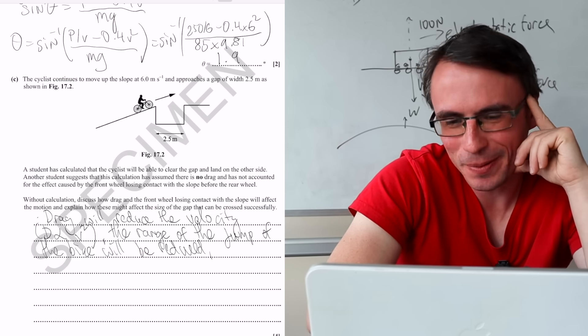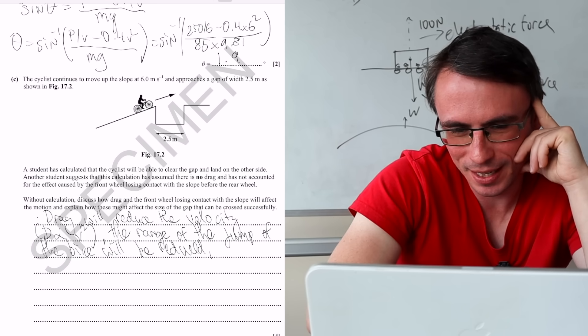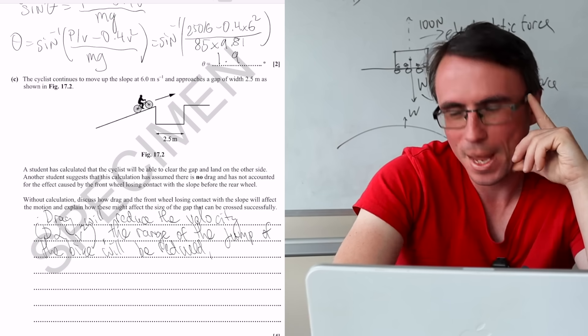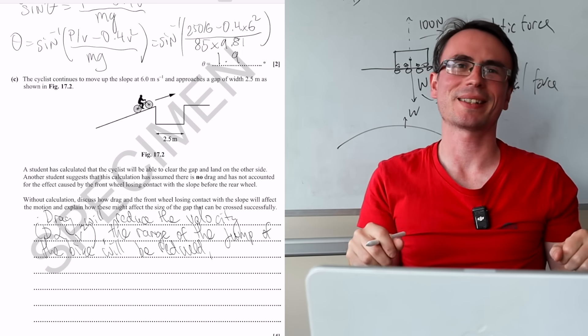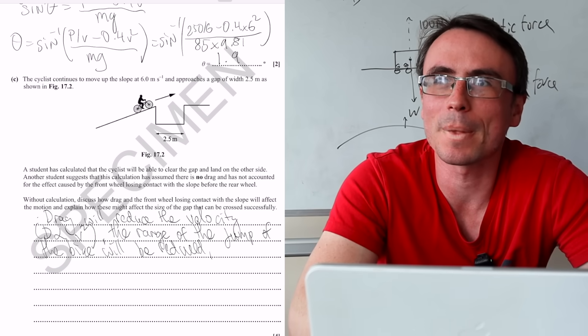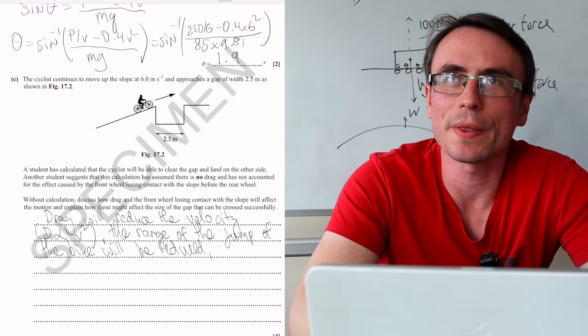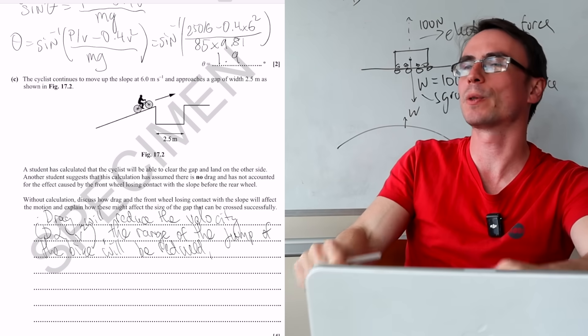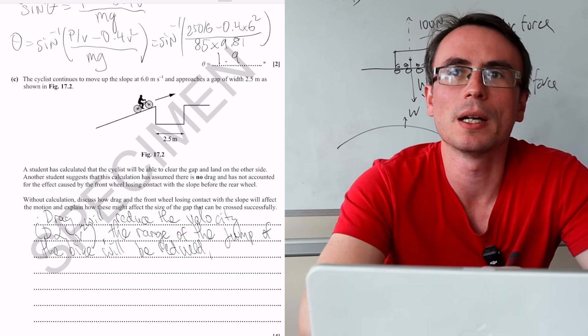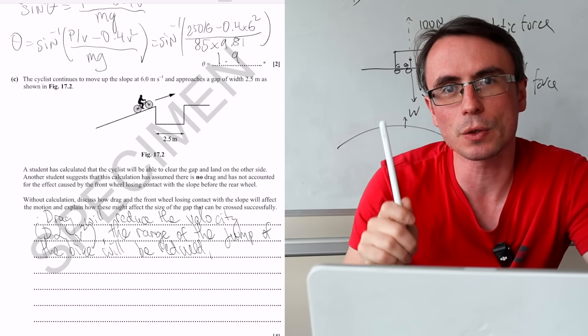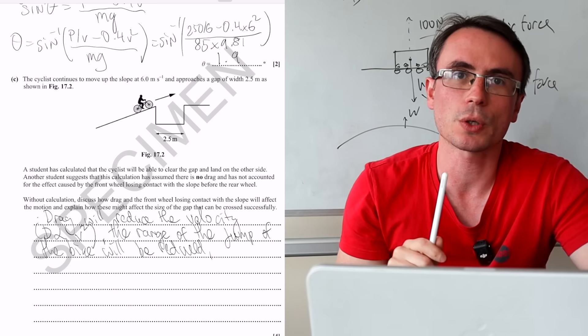I think I actually see what they mean with the front wheel losing contact. So if the front wheel loses contact, and anyone that's been on a bike and maybe done a jump on a bike knows that you instinctively pull your body backwards as you're jumping on the bike.